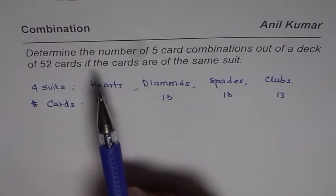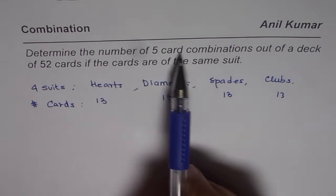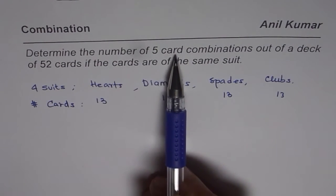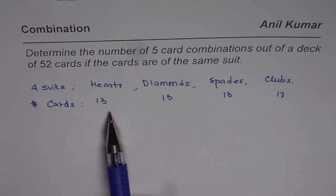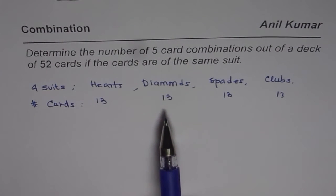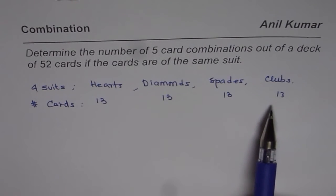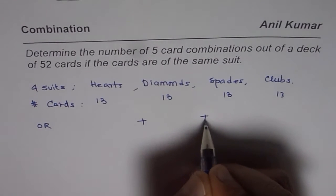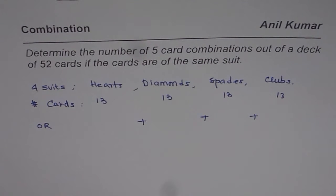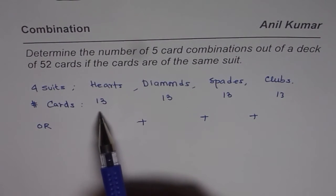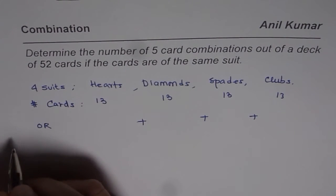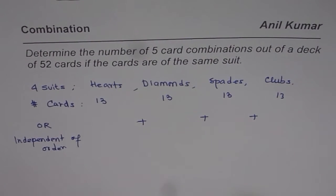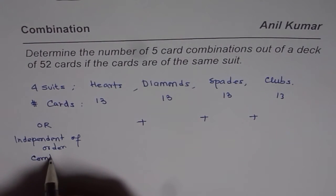Going back to the question: determine the number of five card combinations out of a deck of 52 cards if the cards are of the same suit. That means when you draw five cards, they should all be of the same suit. Since we are selecting five cards, the order doesn't matter — it is independent of order — so we are looking for combinations.